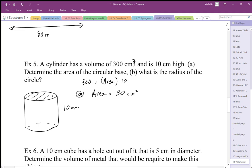To work out the radius of this circle, well, how do I figure out the radius? I know that πr² is going to give me the 30 centimeters squared.